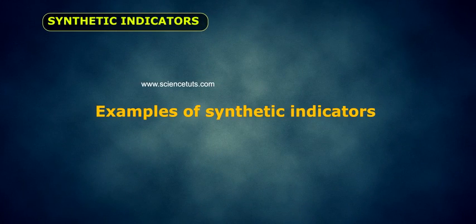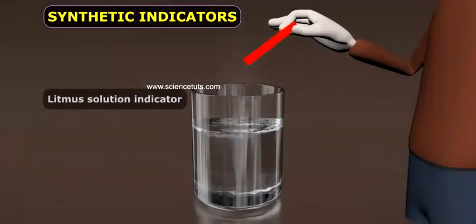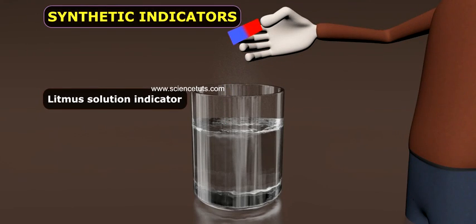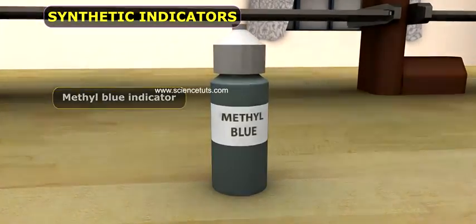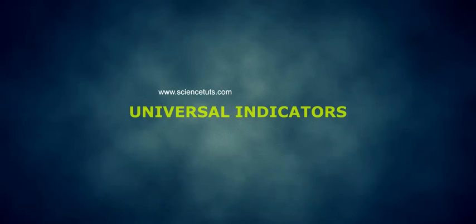Examples of Synthetic Indicators include Phenolphthalein Indicator and Methyl Orange Indicator. Now let's discuss Universal Indicators.